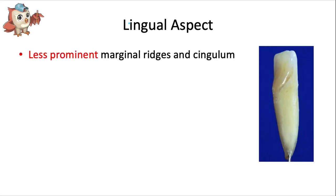Now for the lingual aspect. All mandibular anterior teeth — incisors and canines — have smaller, less distinct marginal ridges and cingula compared to the maxillary anterior teeth. As a result, you'll never see things like lingual pits on these mandibular incisors. I would even go so far to say that this tooth specifically has the least exciting anatomy of any tooth in the mouth.